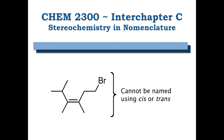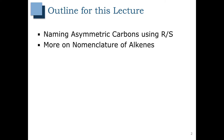We're going to go ahead and start Part 2 of Inter Chapter C, Stereochemistry and Nomenclature. In the second part, we're going to talk a little bit more on nomenclature of alkenes.